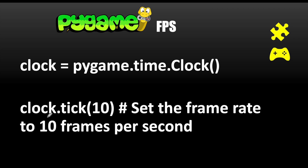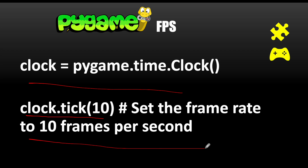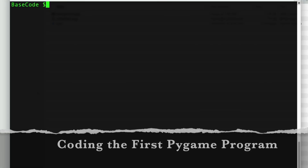To control frames per second, we saw that a sequence of frames gives the feeling of animation. We need to control the FPS so we get a coherent animation experience. This is done with the help of a clock and the clock.tick() setting. For example, setting clock.tick(10) sets the frame rate to 10 frames per second.